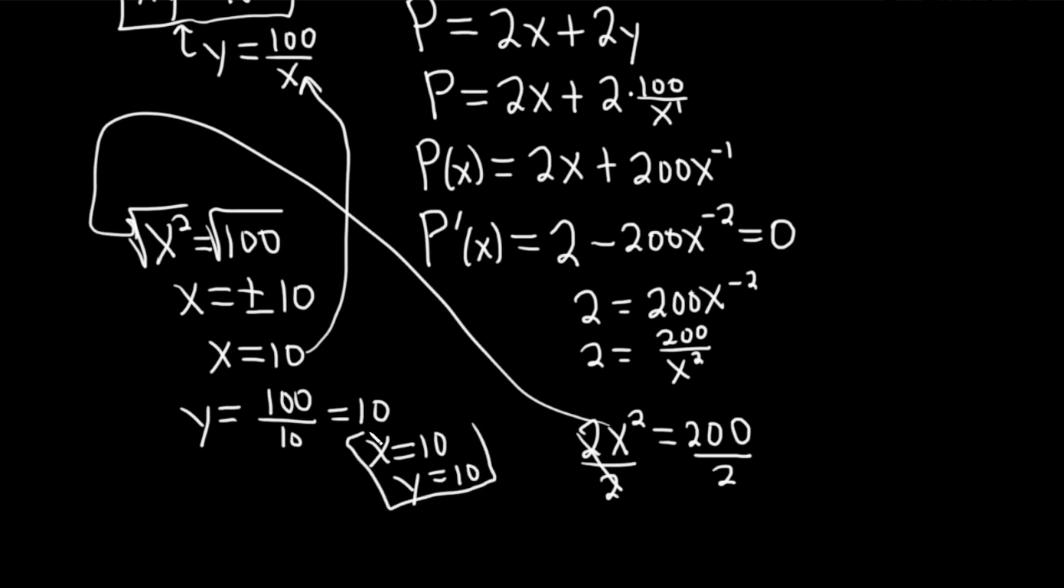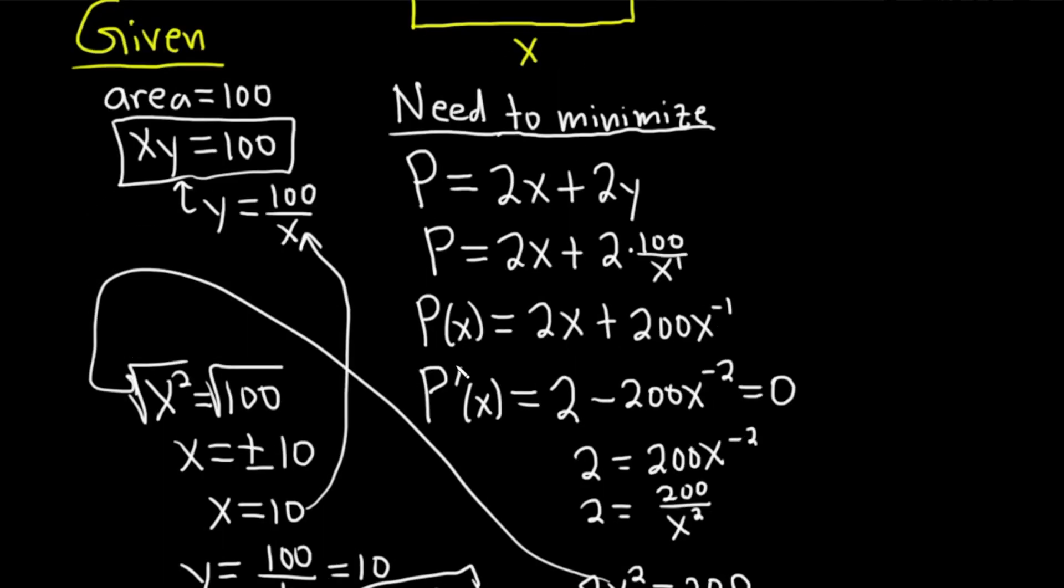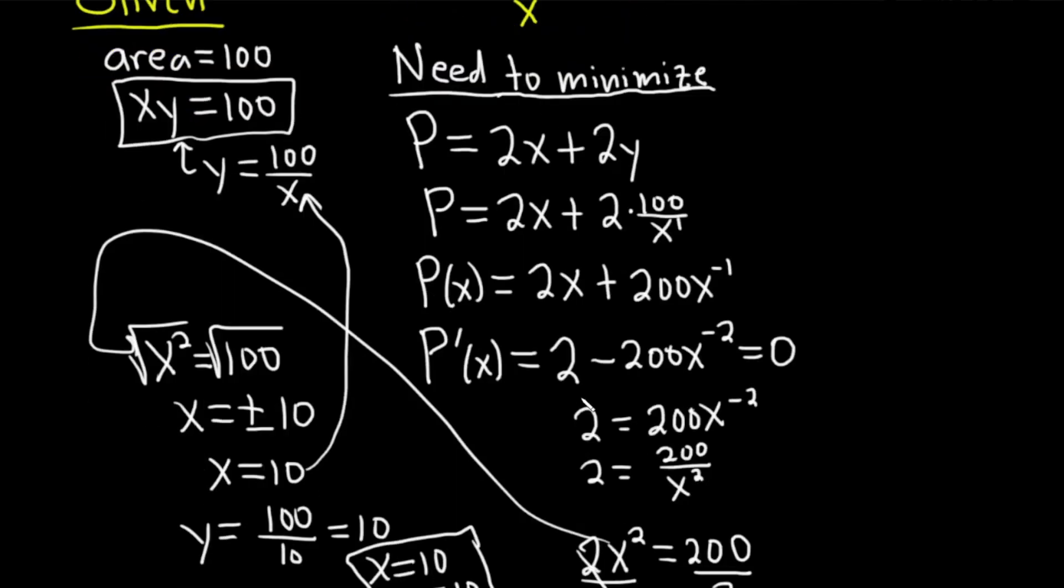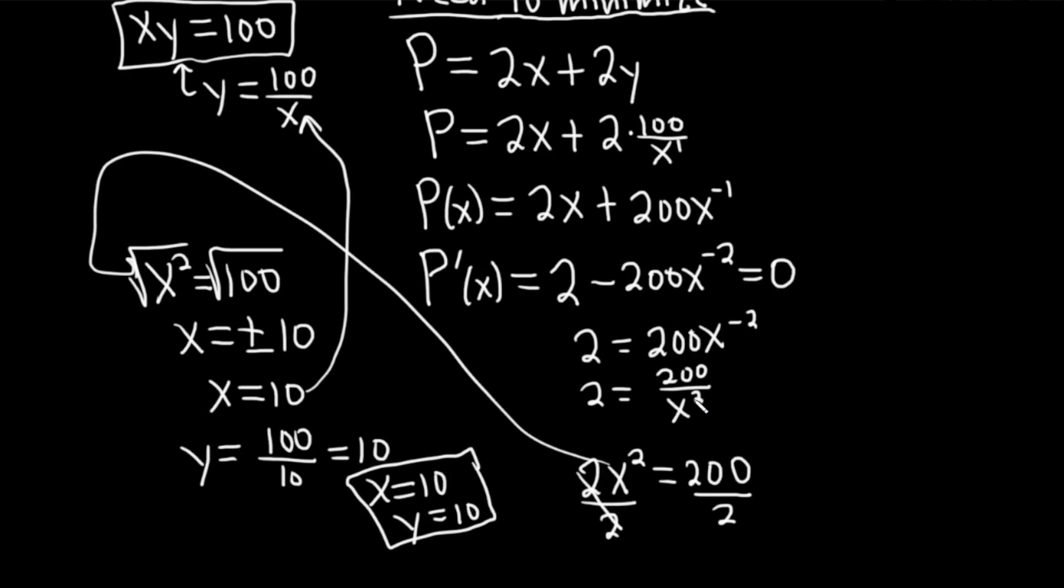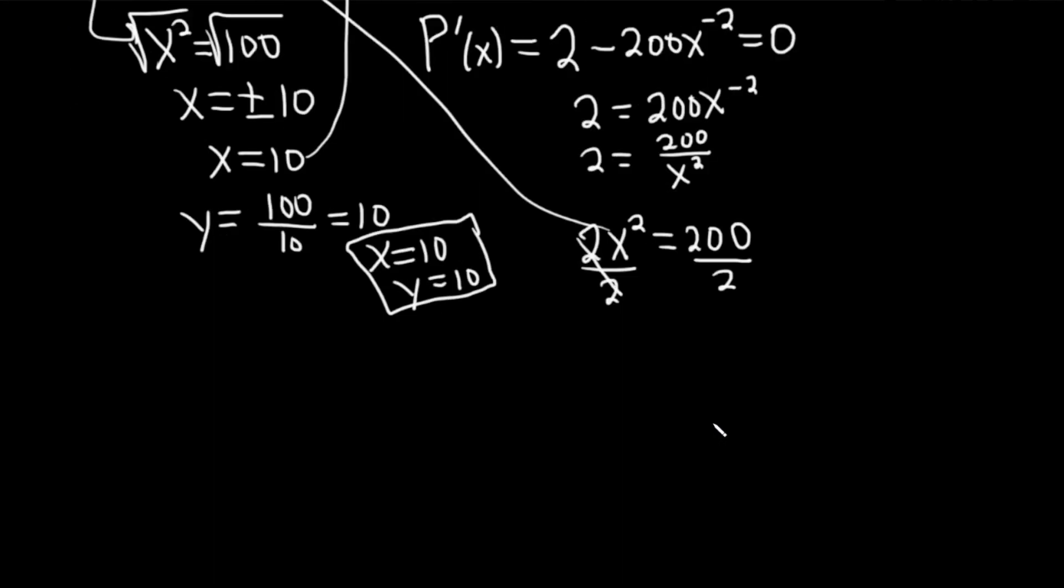However, there is something that needs to be said and something that needs to be done. So we know this is the answer because x can't be negative, so it must be 10, because this question has a physical interpretation, and so it should have a solution, and we've found it. However, mathematically, we should still verify that x equals 10 is going to give us a minimum. We need to verify that.